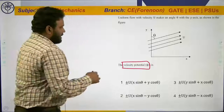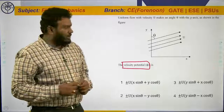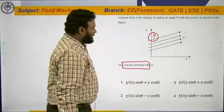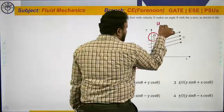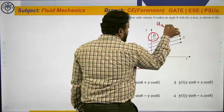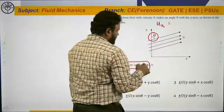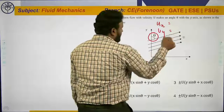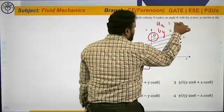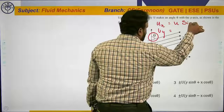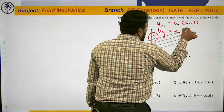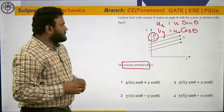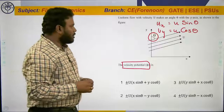Now, the components u and v are not directly given, but from the diagram, the angle theta is measured with respect to the y-direction. So clearly, we can write the x-component as ux = u sinθ and the y-component as uy = u cosθ.